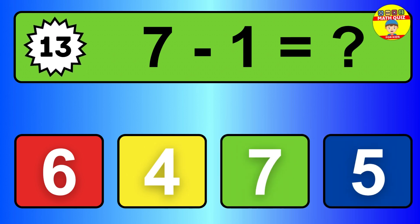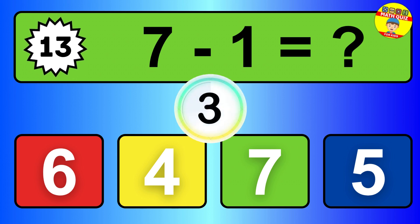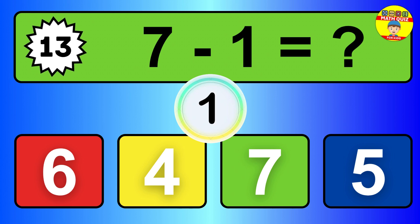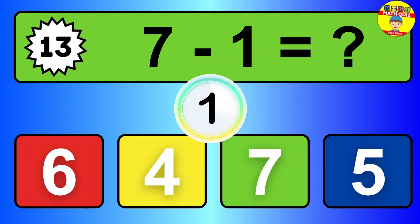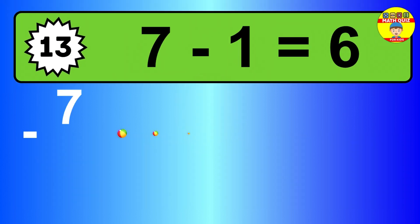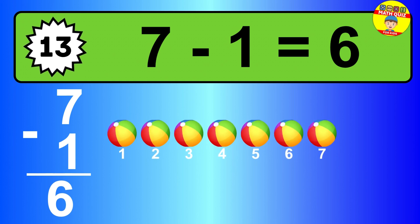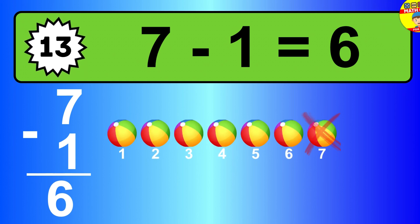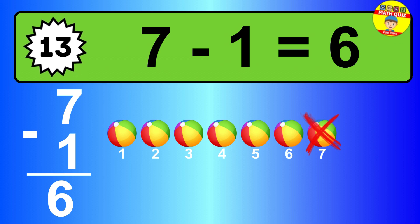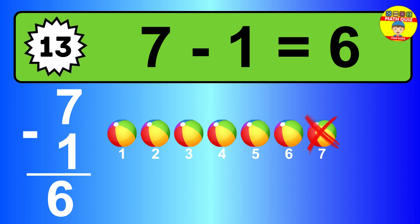Question thirteen. Seven minus one equals what? So the answer is seven minus one is six. Let's count it. One, two, three, four, five, six.